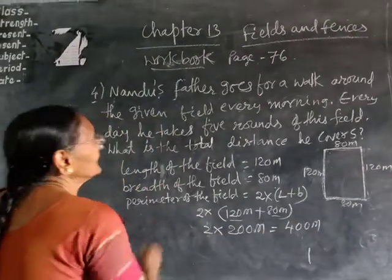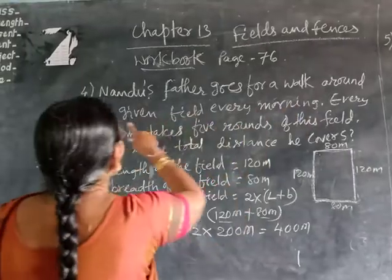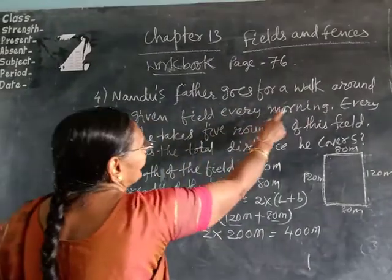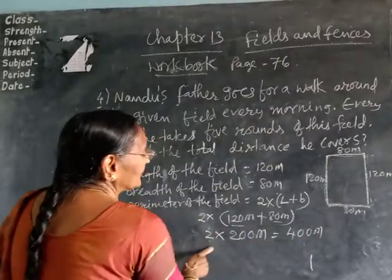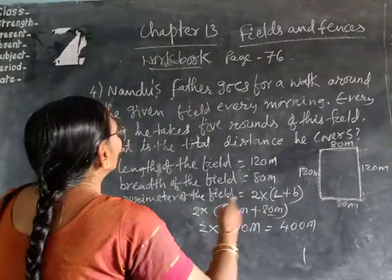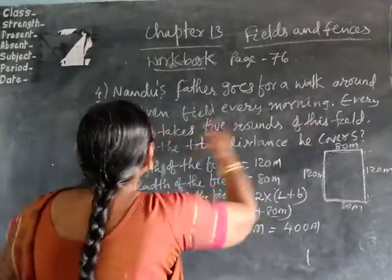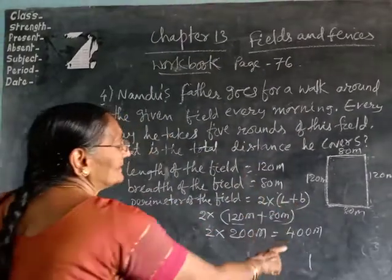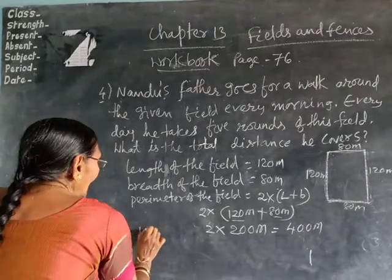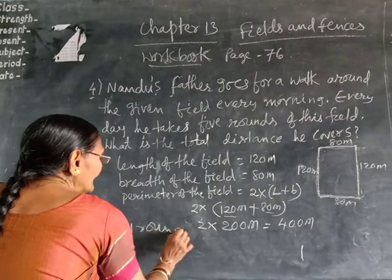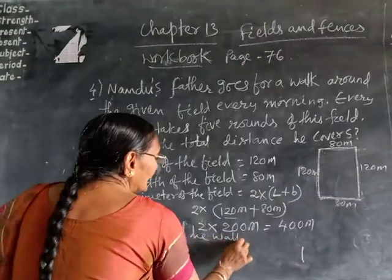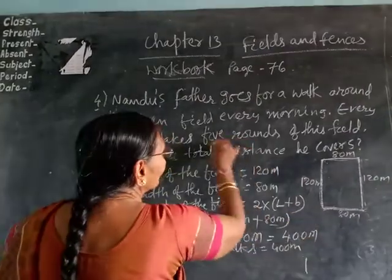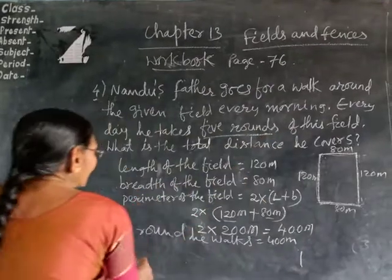So, every day he is walking 400 meters every morning in this field. He takes 5 rounds every day. One round means 400 meters per round. How many rounds he takes every day? 5 rounds.